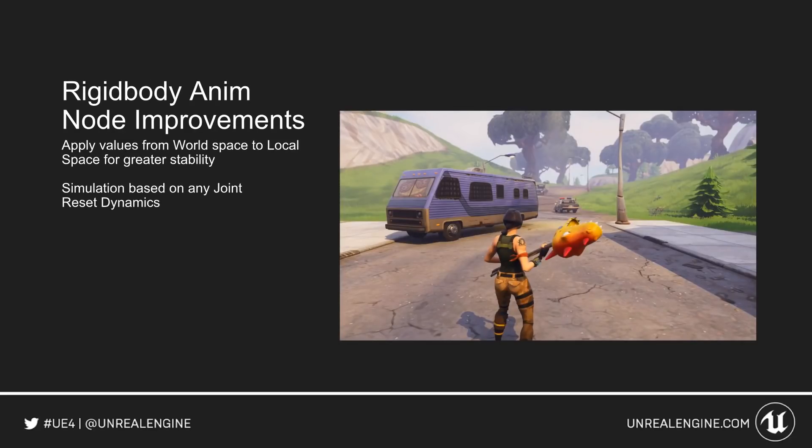Rigid Body Anim Node improvements. You can see the head of this weapon — it's a little dinosaur that flops back and forth. You can now apply values from world space to local space for greater stability, and simulations can be based on any joint, allowing you to easily reset dynamics as needed.